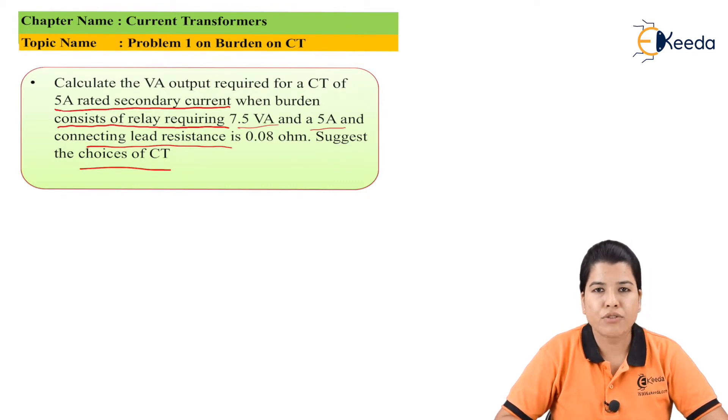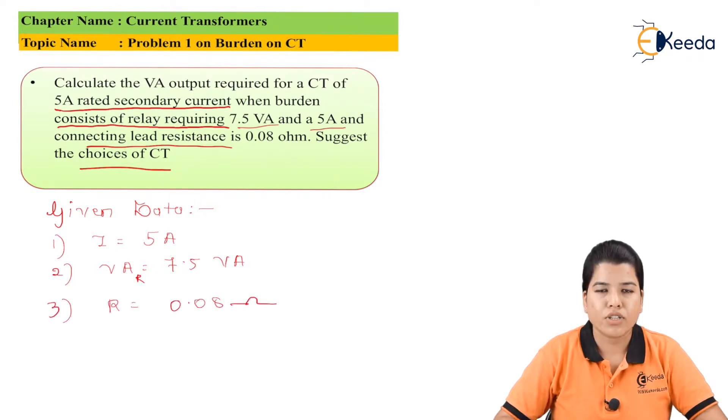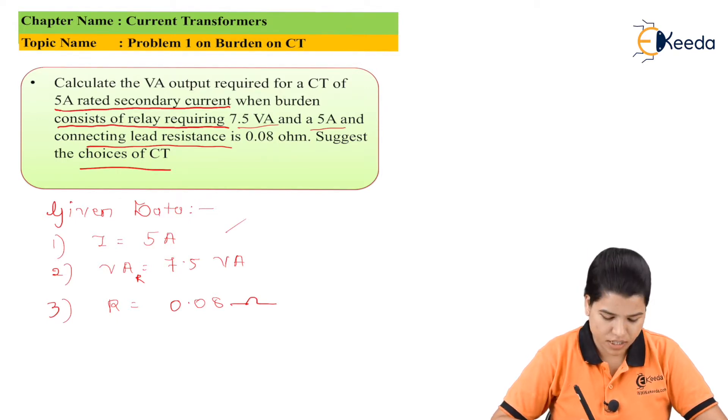So in this case we have to select the proper CT for the application. To solve this problem first let us write down the given data. The given data is current is equal to 5A, the VA of the relay is given by 7.5 VA, and the resistance of the connecting lead is 0.08 ohm.